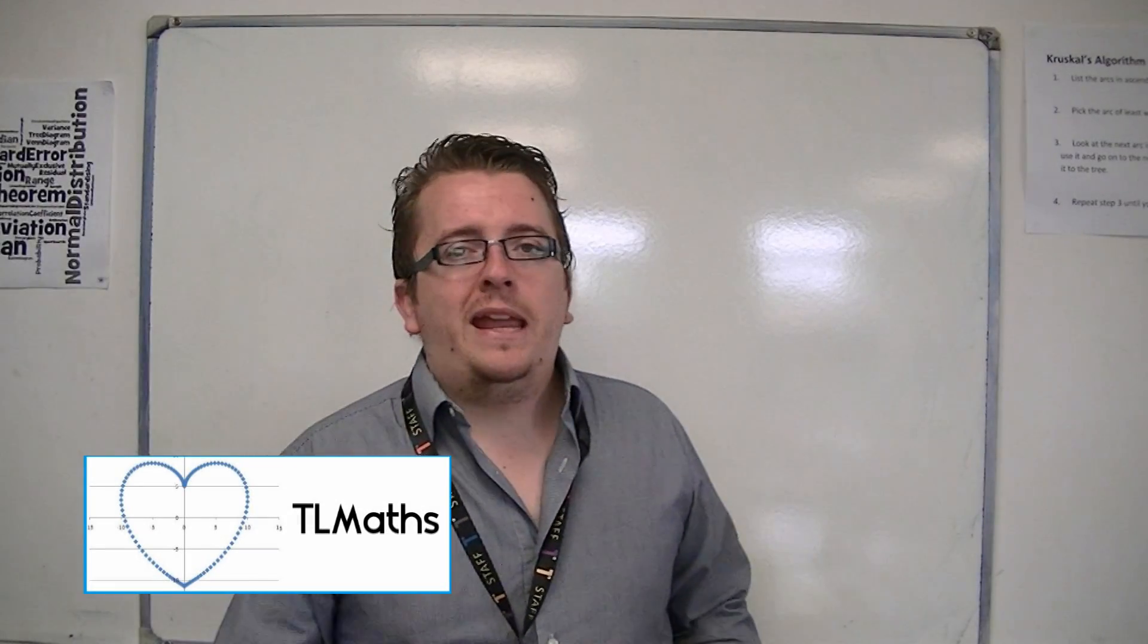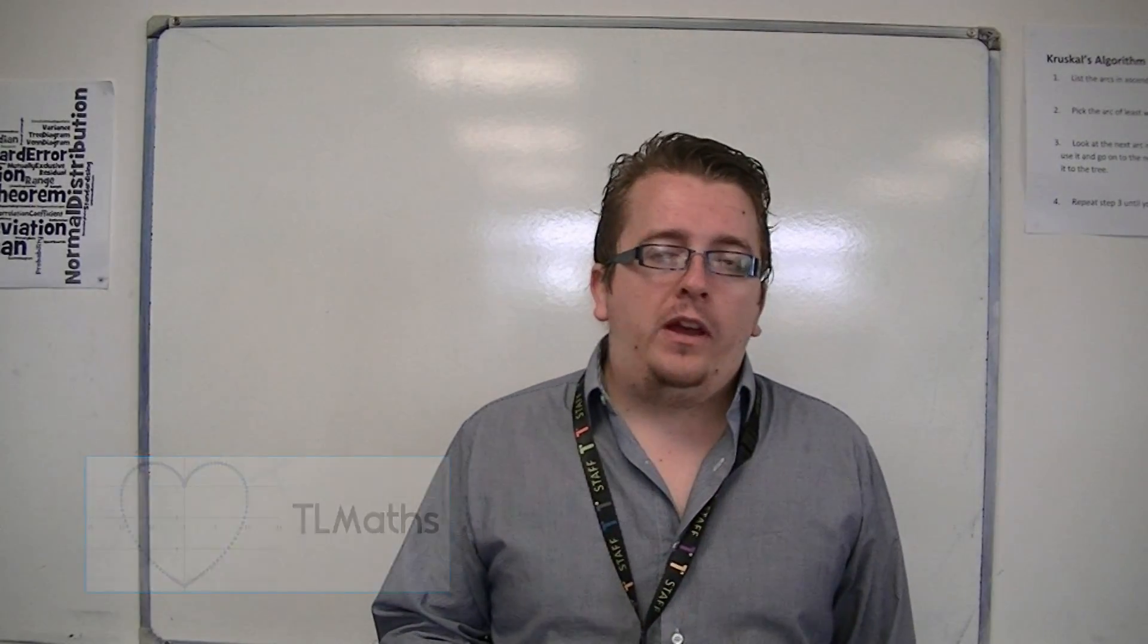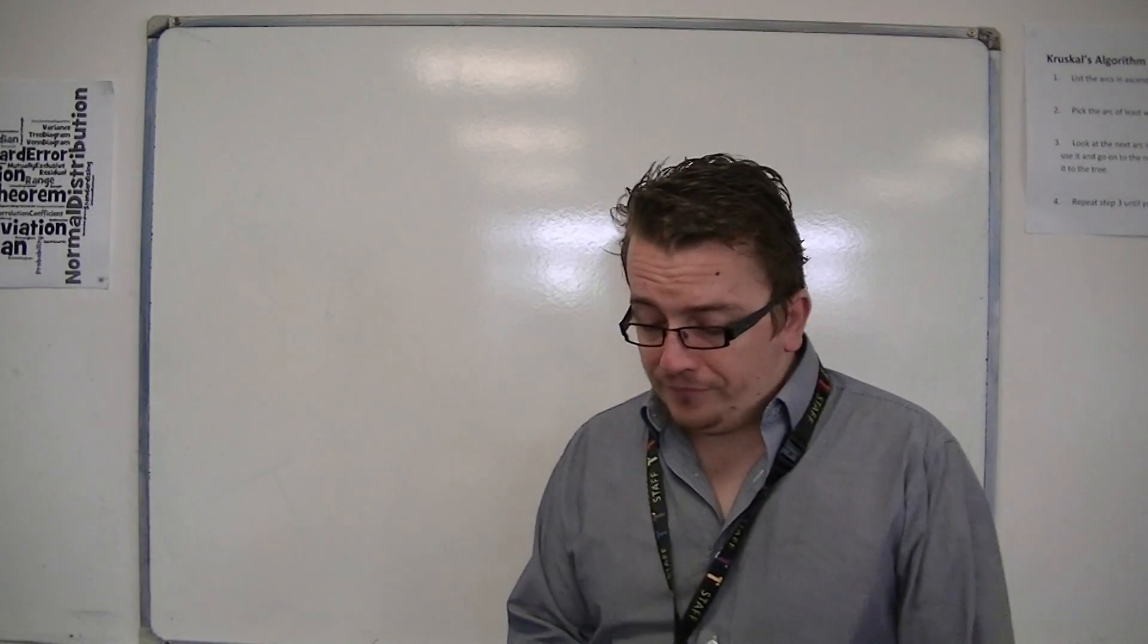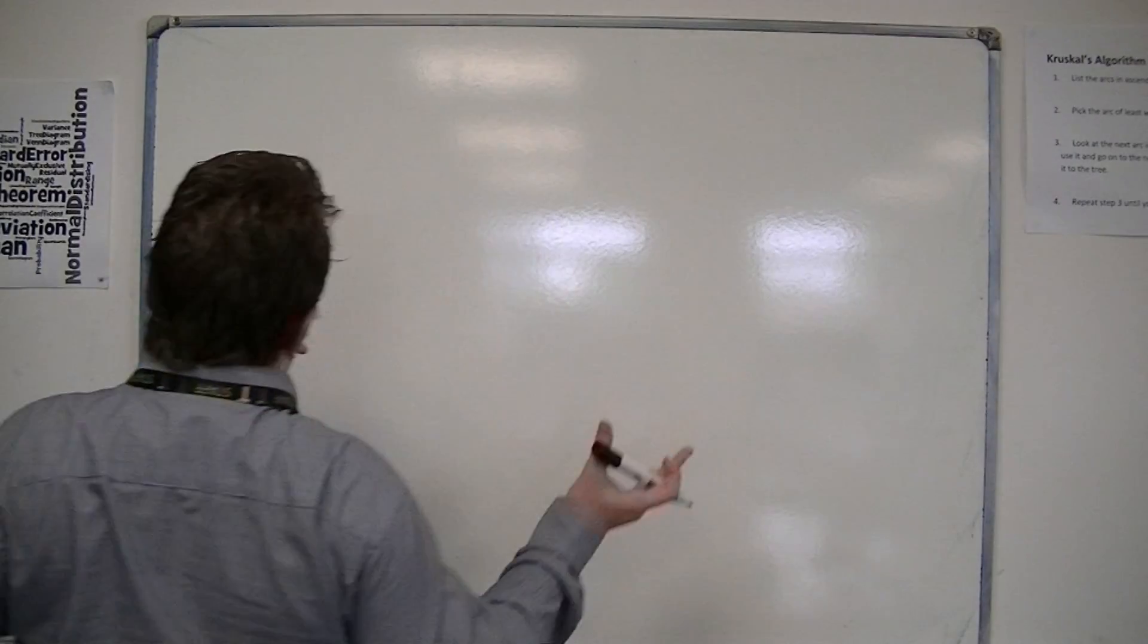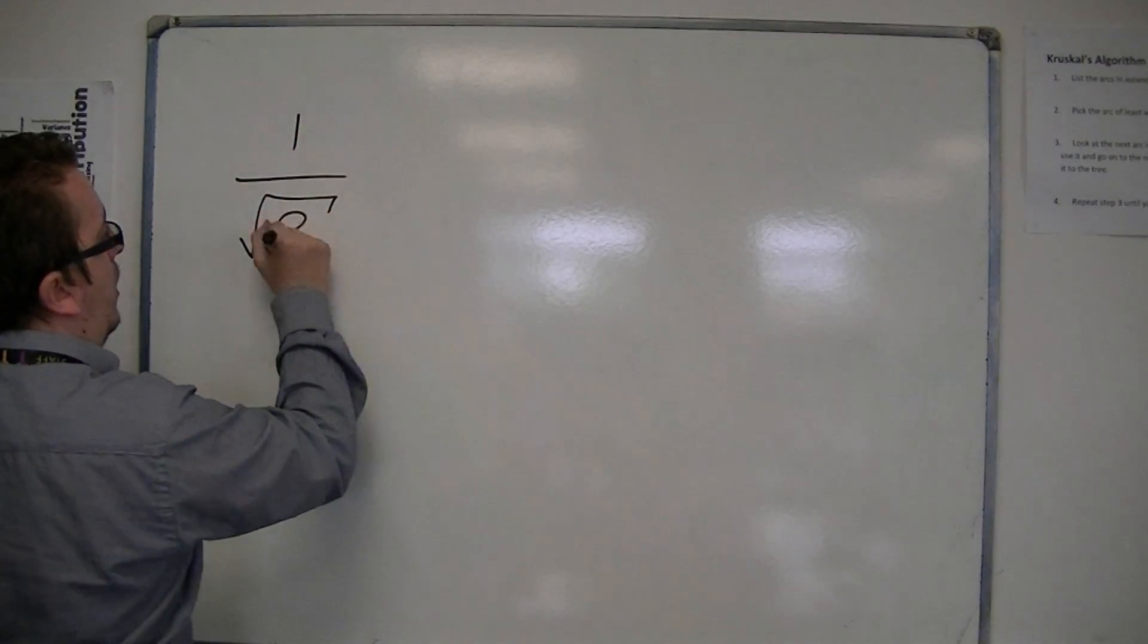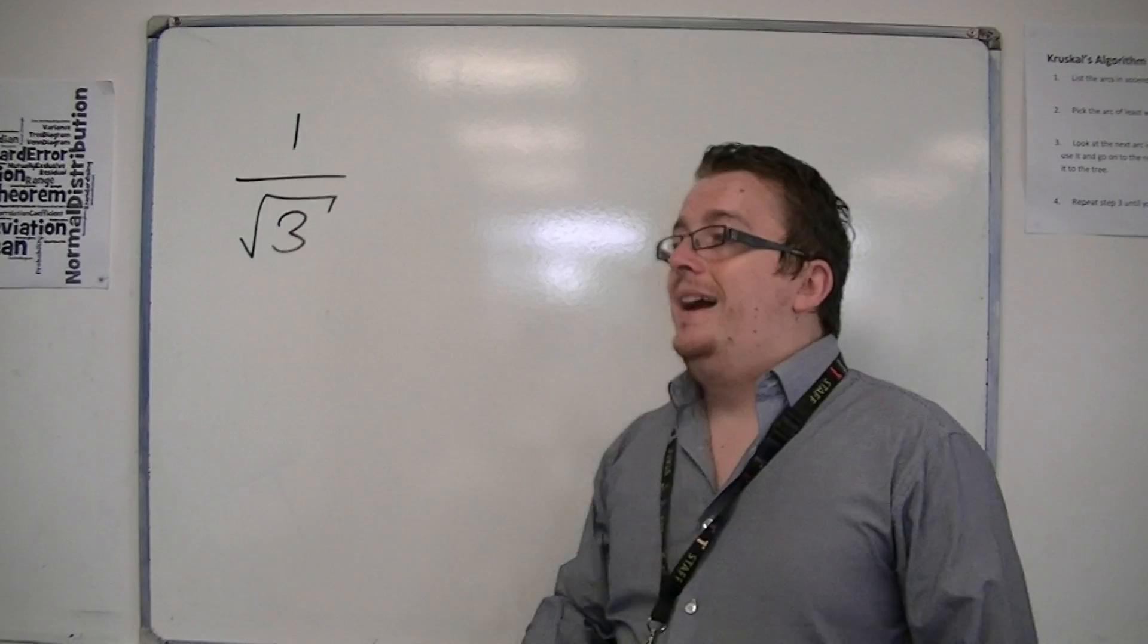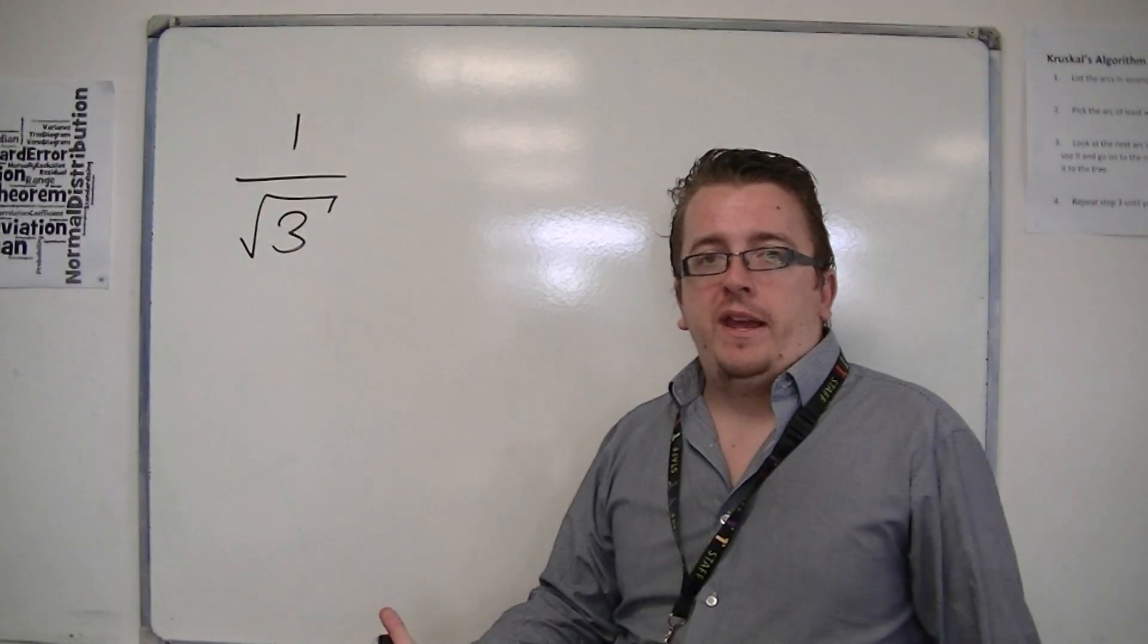Okay, in this video we're going to be looking at rationalising the denominator. So this sounds quite complex, but continuing on from what we've learned about surds, what this means is that we're trying to make something that looks like 1 over a root. So 1 over the square root of 3, for example, has an irrational number as its denominator.